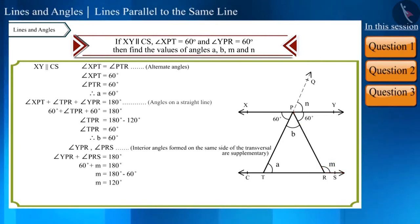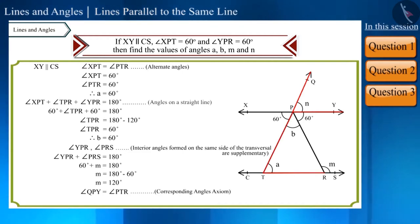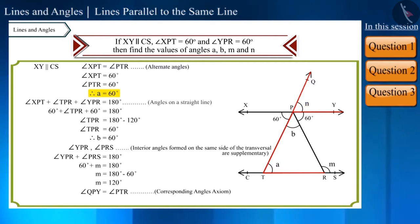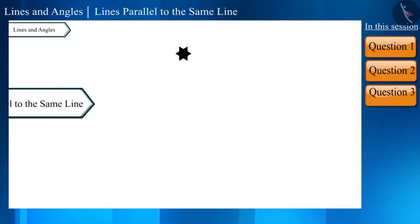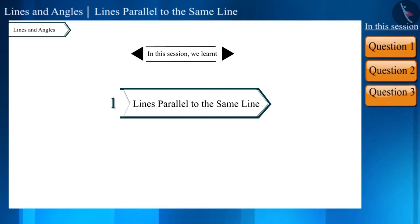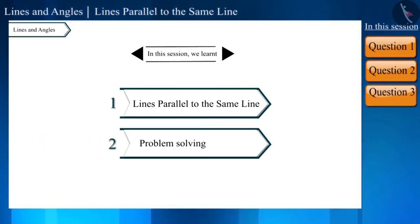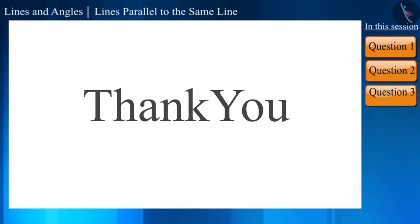Looking at the figure, angle QPY and angle PTR are corresponding angles — that is, angle A and N are corresponding angles. Since the measure of A is 60 degrees, N will also be 60 degrees. That's all for this session. Today we solved some questions related to properties of lines parallel to the same line. See you in the next video, thank you.